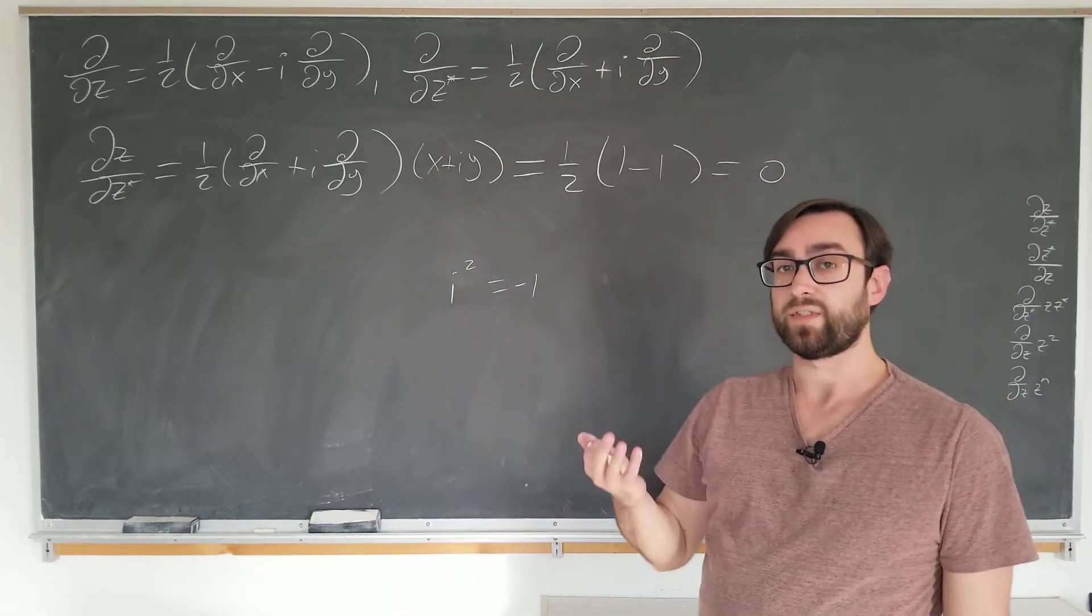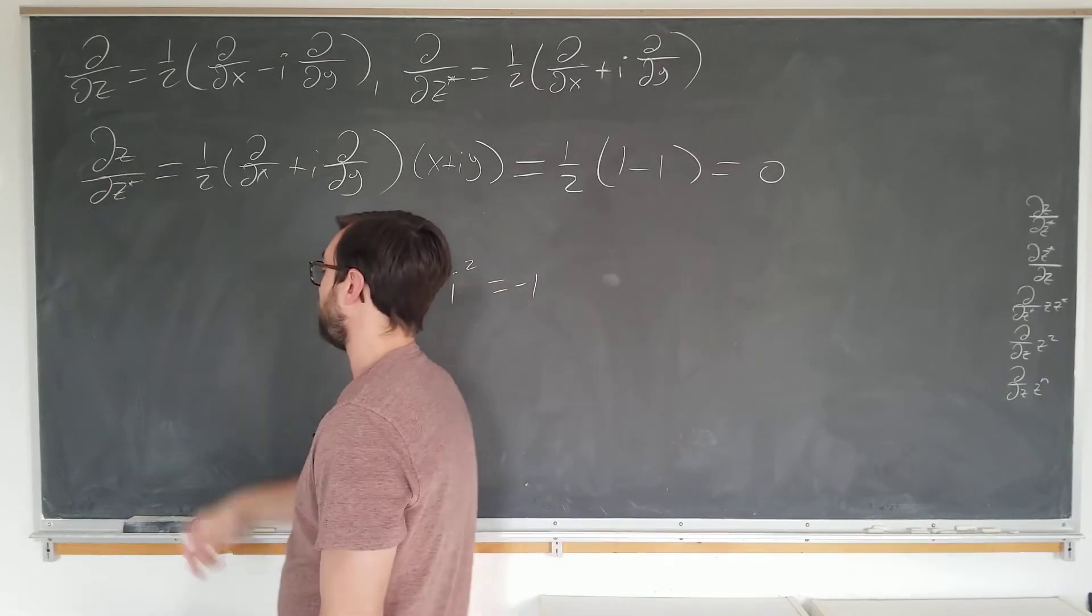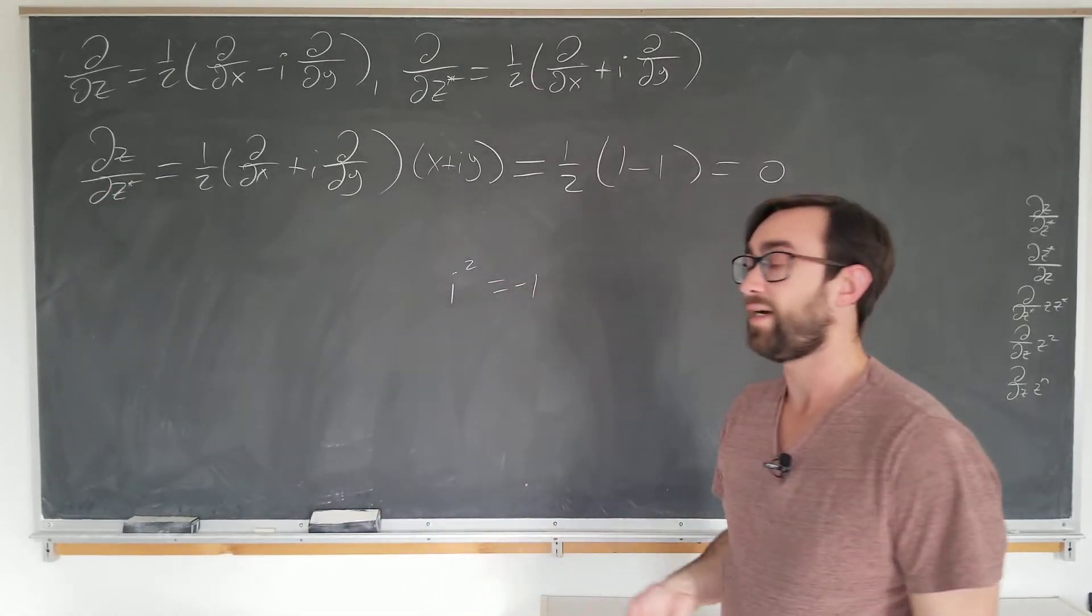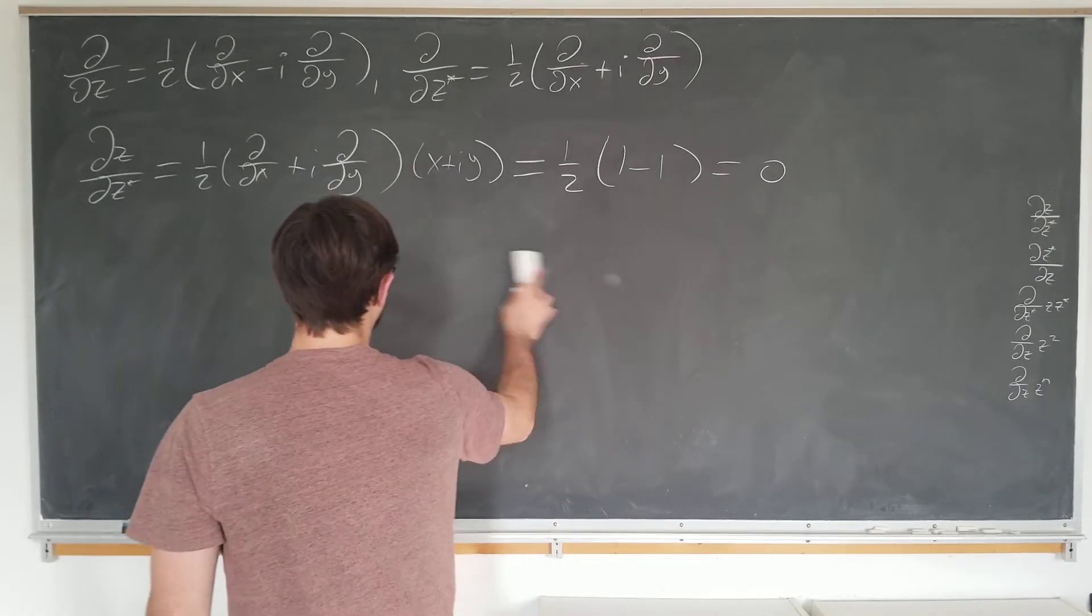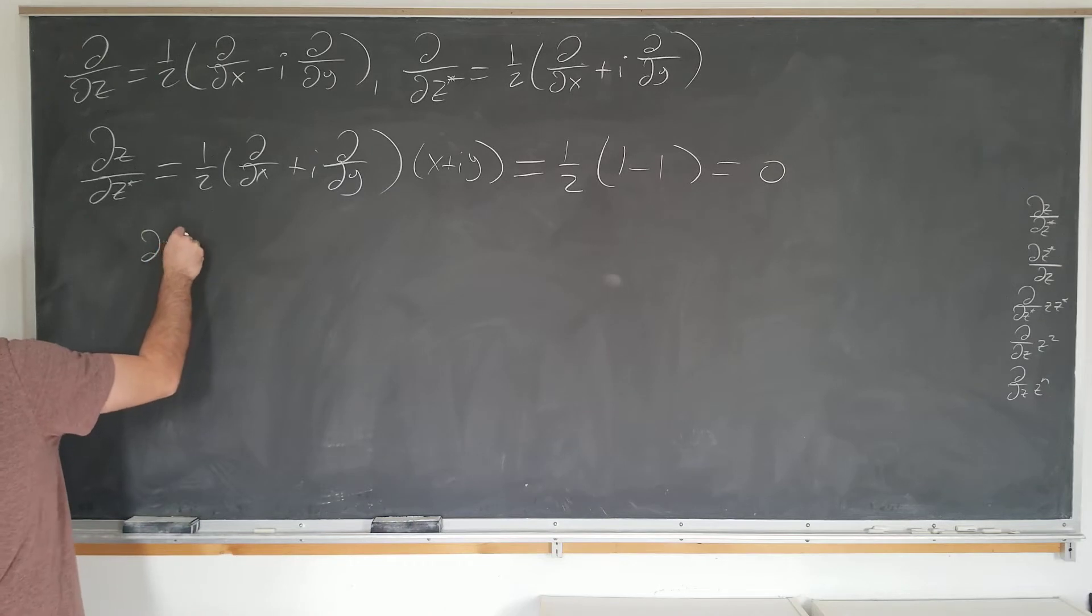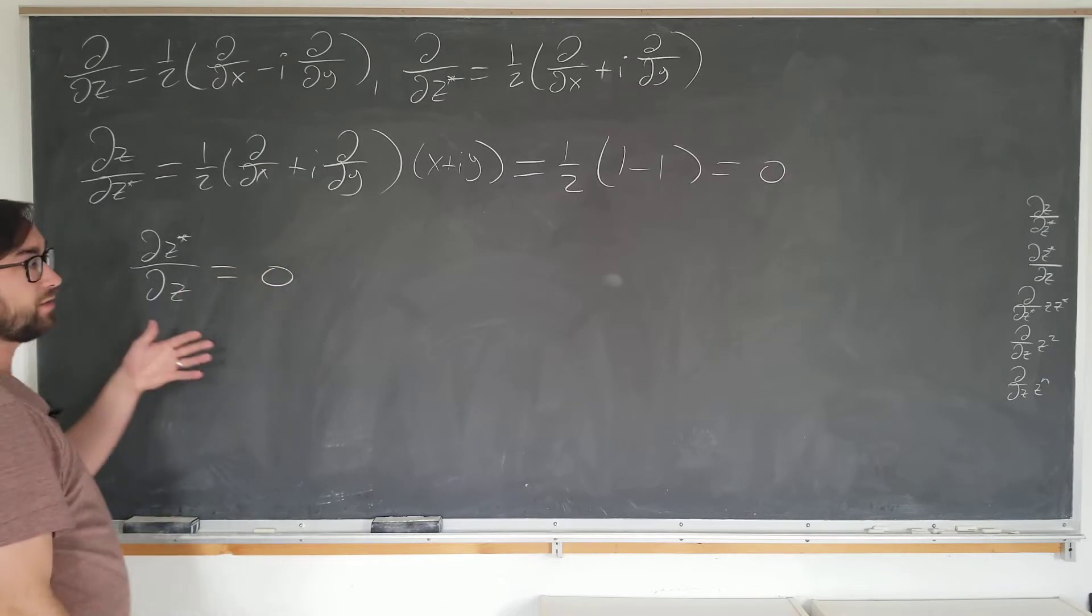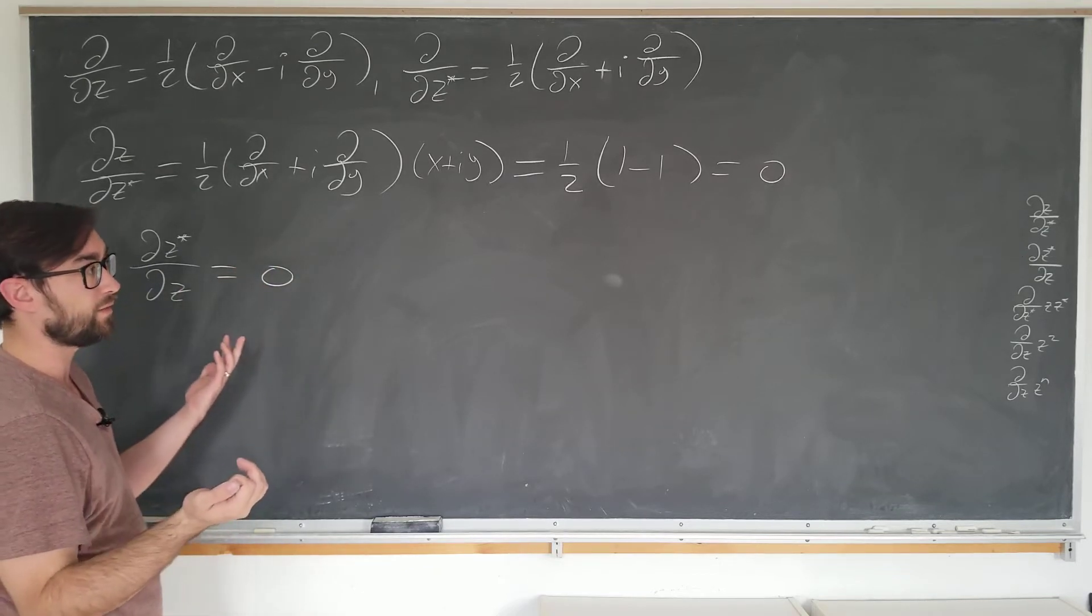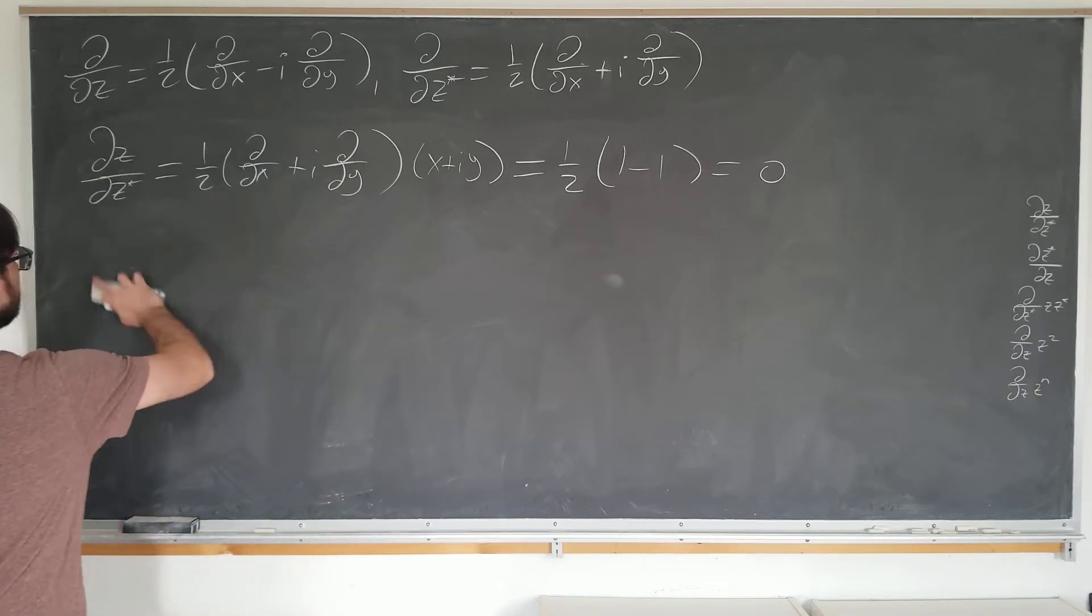So in this first example we see that this instruction is telling us that z is not a function of z star. They are in fact independent in this sense. If you evaluated dz star by dz, you would also find that it's zero as well. You can feel free to check this for your understanding. And we are actually going to do that now just so you can see it.